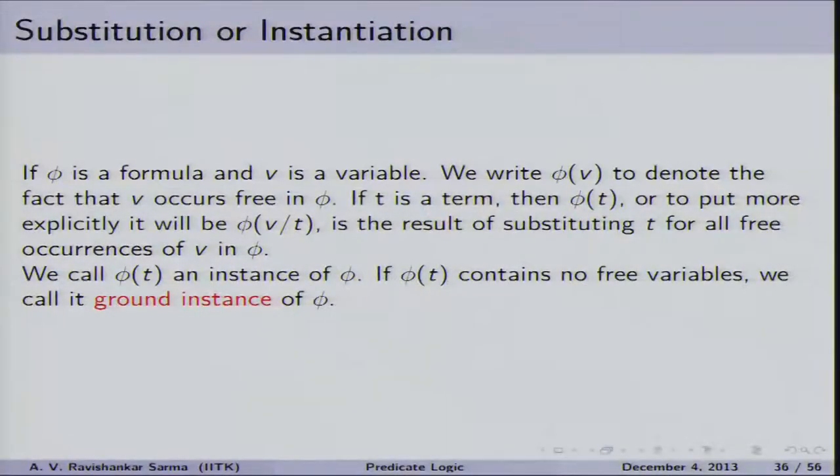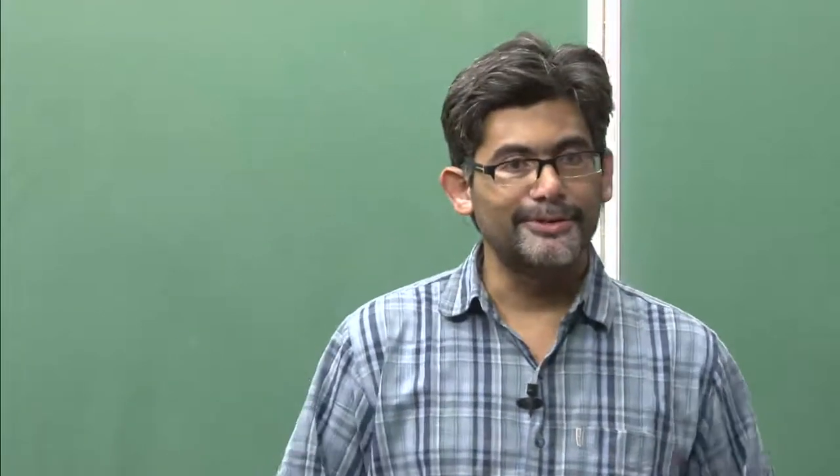Today we will discuss substituting a term for a variable, what we mean by instantiation, and various kinds of translations. In predicate logic, given an English language sentence, how do we translate it into the language of predicate logic? At the end of this lecture we will also discuss that each and every formula has its own corresponding unique tree diagram.